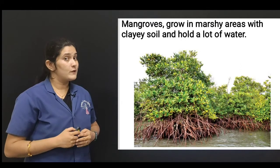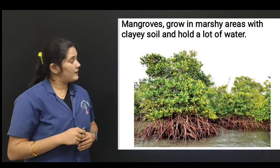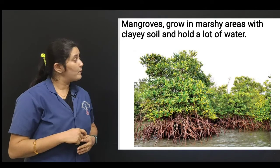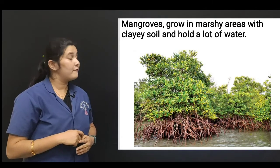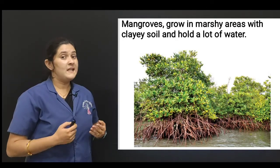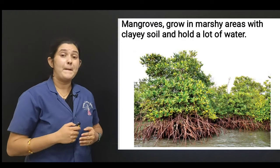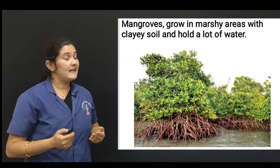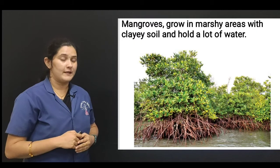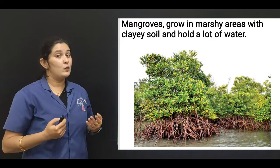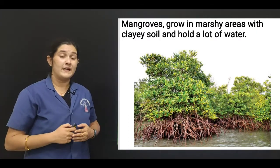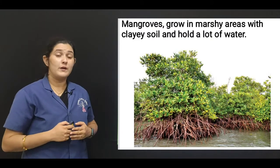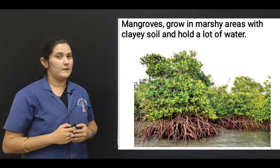Observe the roots carefully, children. The roots are spread on all sides to prevent the tree from falling. These roots are found in the bay fig tree, and they help it to absorb more nutrients from the soil.